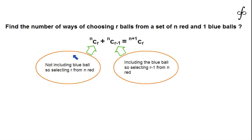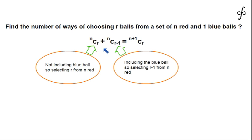Hello dear students. Today we are taking another combinatorial identity — a very famous one found in high school books in the chapter of permutation and combination. The identity states that nCr plus nC(r-1) is equal to n+1Cr. This is a very famous identity that has been used for various questions.